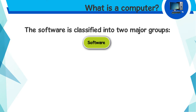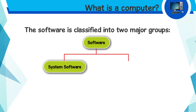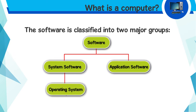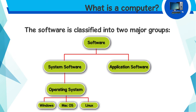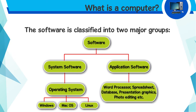Software is classified into two major groups: one, system software; two, application software. System software is the operating system, while application software includes various applications installed on your computer like word processor, spreadsheet, database, presentation graphics, photo editing, etc.